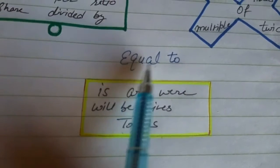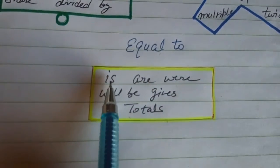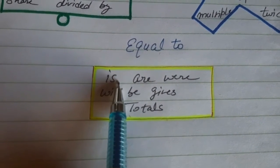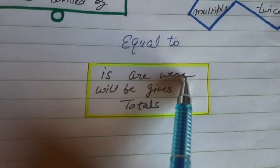And the last one: equal to. What are the keywords used for equal to? Is, then the sum is, then the product is, then we are getting, were.